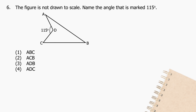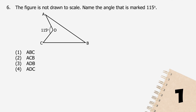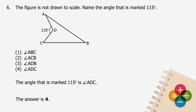Question 6: The figure is not drawn to scale. Name the angle that is marked 115 degrees. The angle that is marked 115 degrees is angle ADC. The answer is 4.